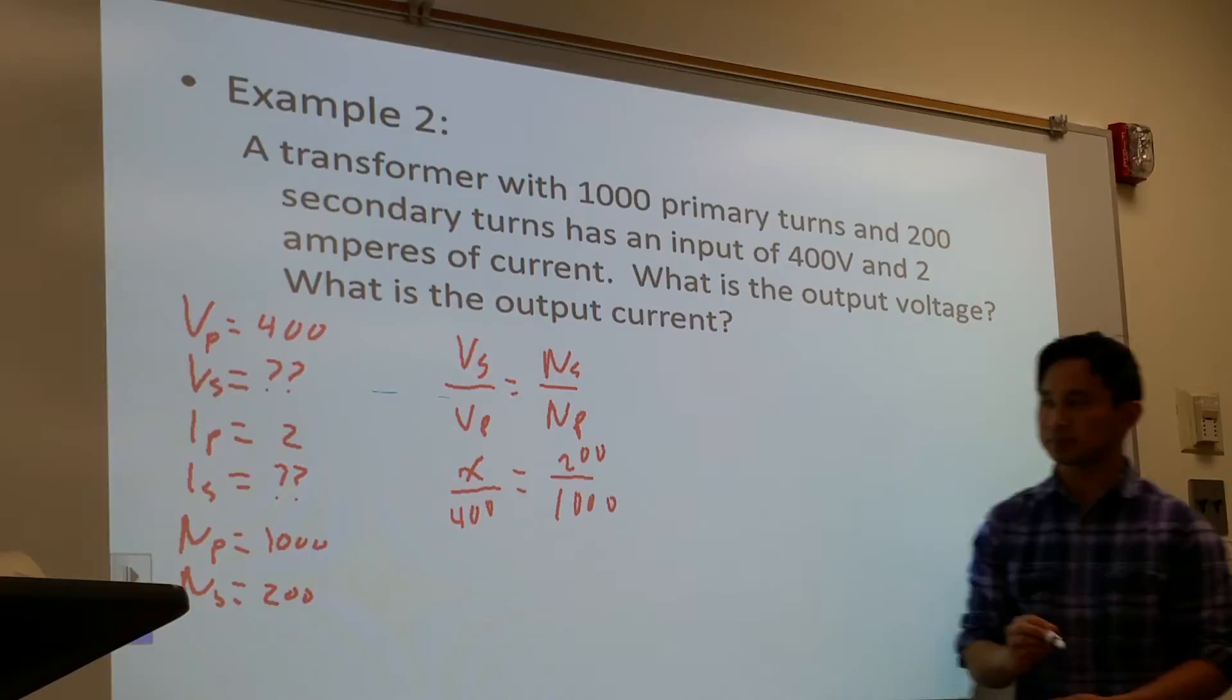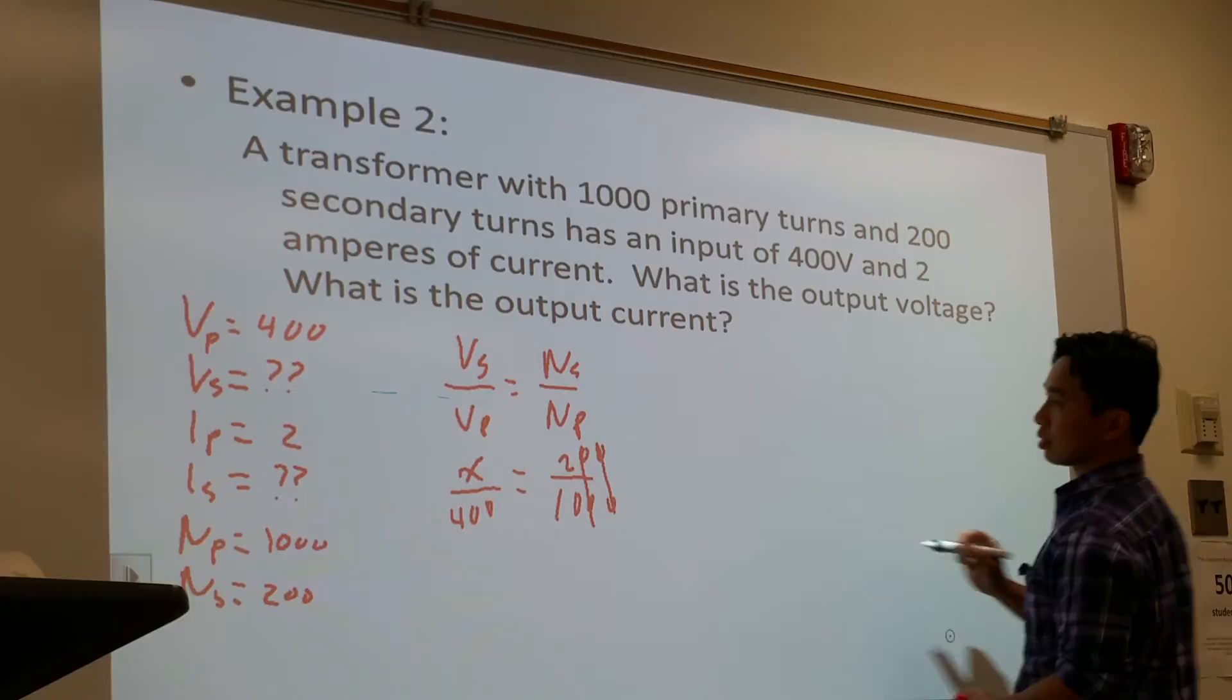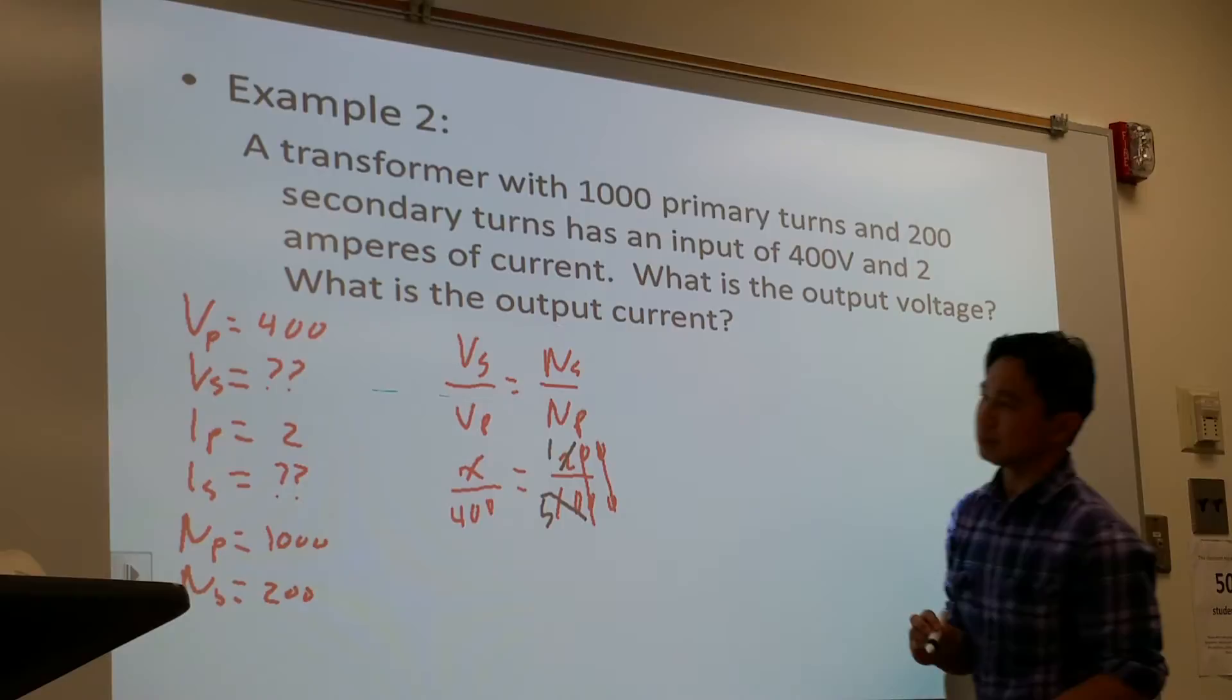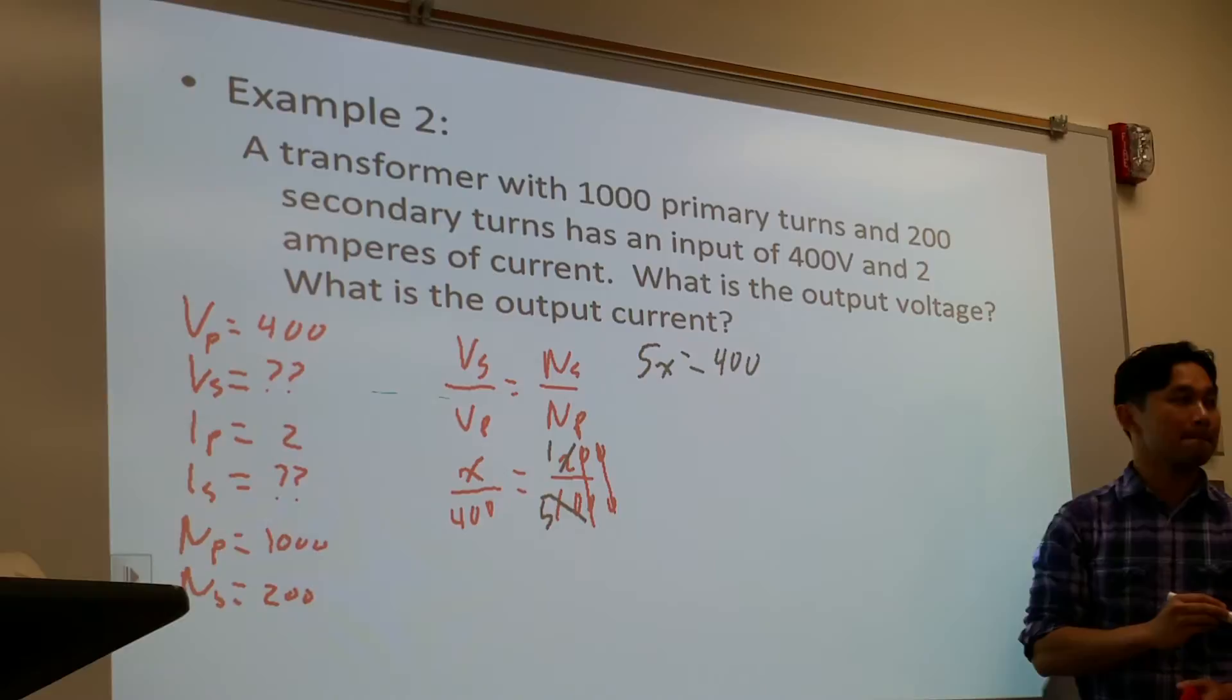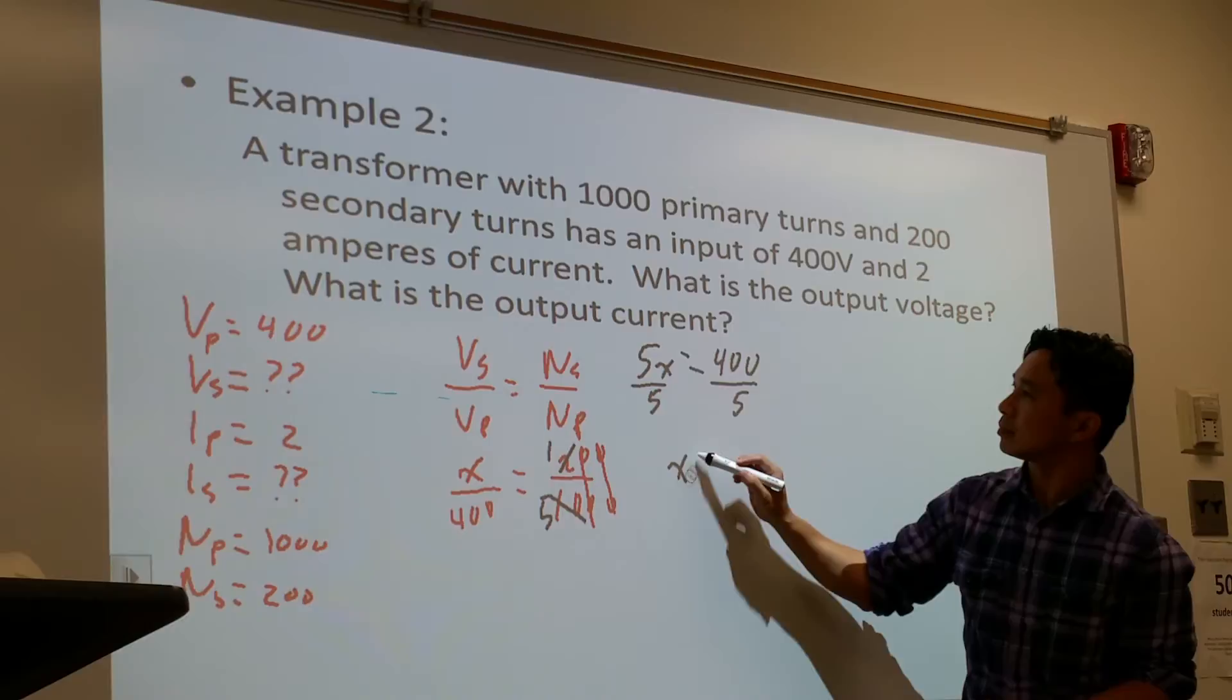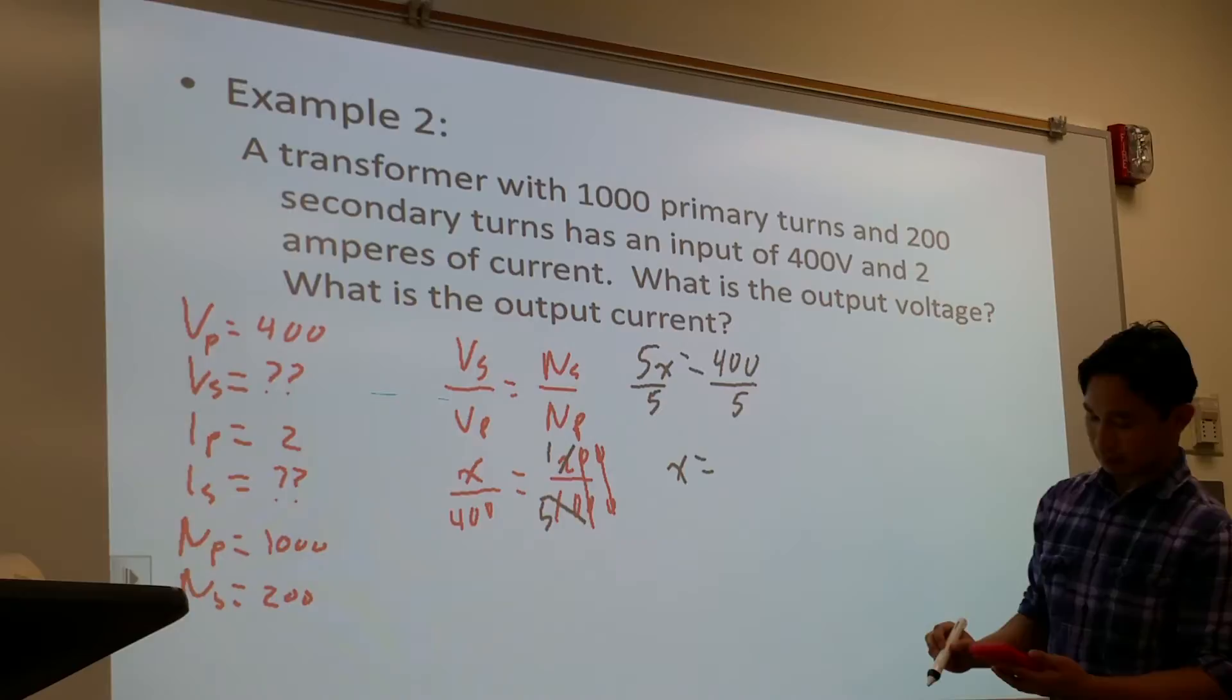Output is unknown. So it would be 1 over 5, cross-multiply, 5 times Vs equals 400. Divide both sides by 5.